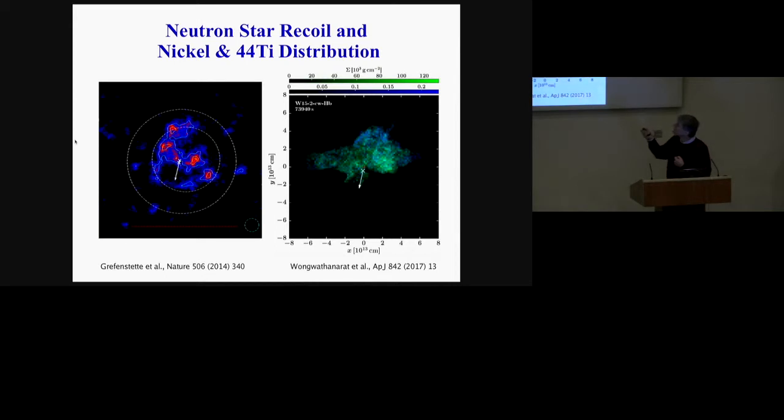That's exactly compatible with what our models show in cases where the kick is high. Here is one of the models which we simulated, two dozen simulations at that time when we published the paper for this model. We had one case which looked morphologically very similar to the Cas-A remnant. Here is the simulation, neutron star kick and iron distribution and titanium distributions.